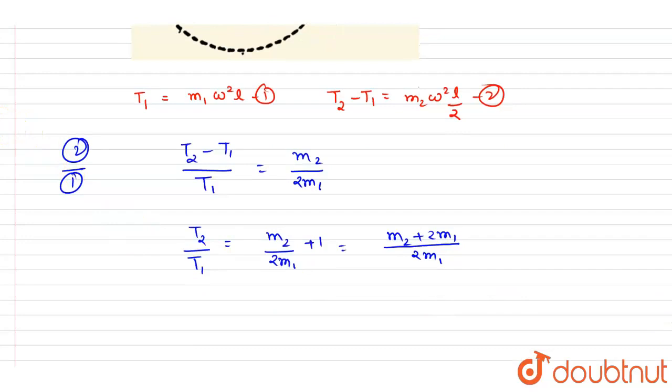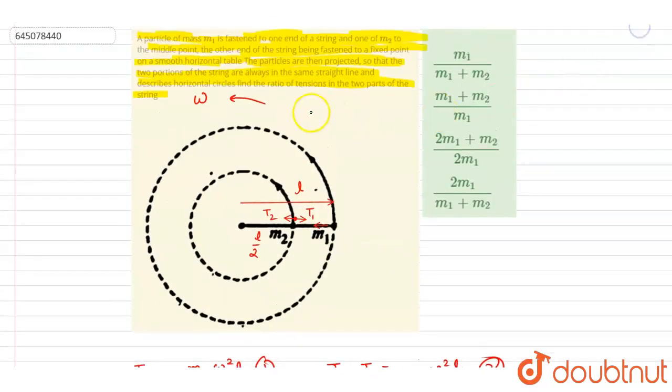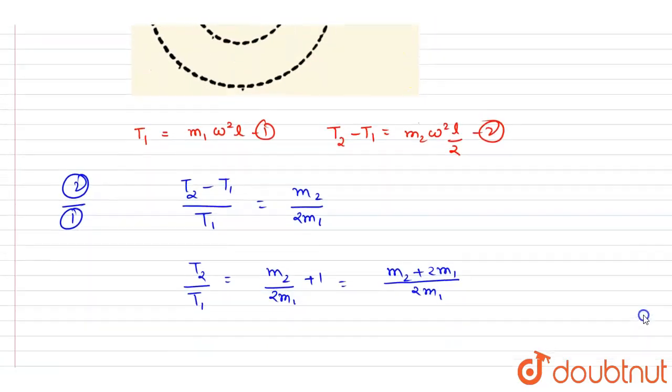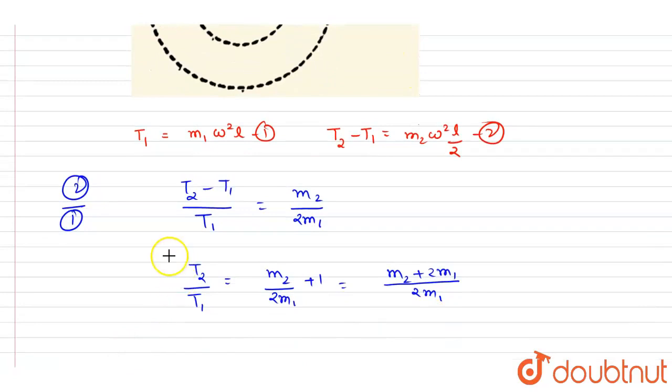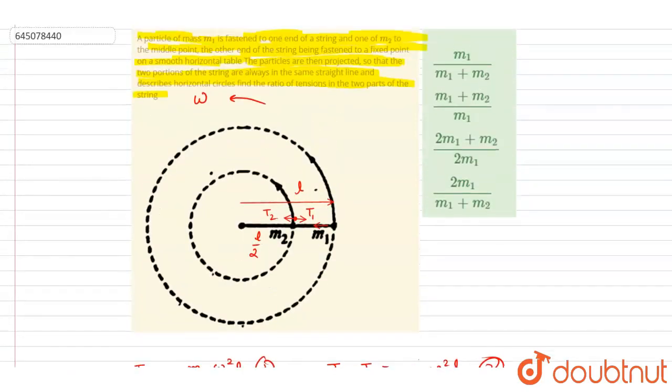If you see, we got the ratio of T2 by T1. In the question it is asked the tension in the two parts of the string, so I will write down T1 by T2. It equals 2m1 over m2 plus 2m1. This is the correct answer.